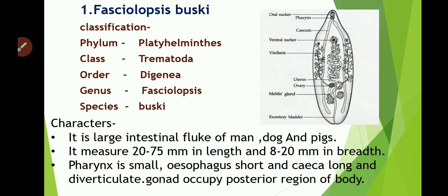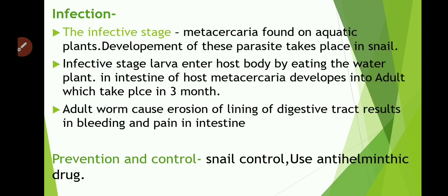Its characters: it is a large intestinal fluke of man, dog, and pigs. It measures up to 20 to 75 millimetres in length and 8 to 20 millimetres in breadth. Its pharynx is small, esophagus is short, and the caeca are long and diverticulate. Gonads occupy the posterior region of the body.